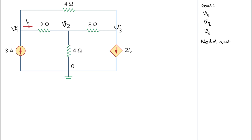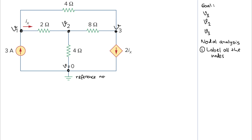The first step is to label all the nodes. We are already given by the problem: this is V1, this is V2, and this is V3. This is our ground or reference node, so this is zero — the voltage here equals zero because that is our reference node or ground.